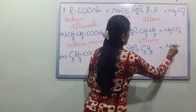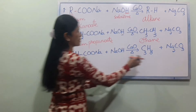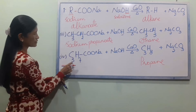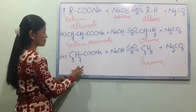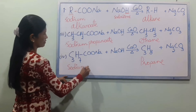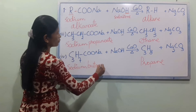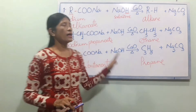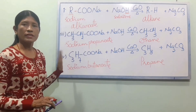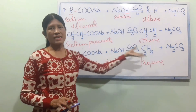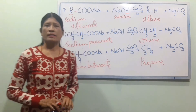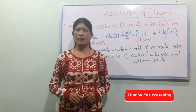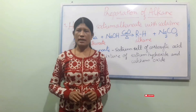C3H8 plus Na2CO3. When you have C3H8 (propane) as the product, you can use C3H8 plus Na2CO3 in the reaction. This illustrates the laboratory method for alkane preparation using the sodium salt of a carboxylic acid and NaOH/CaO, which is used in alkane coaching and helps you develop your understanding.